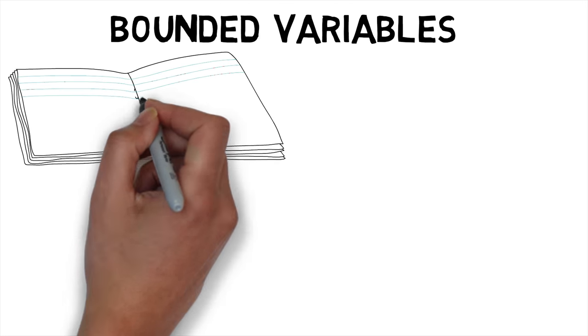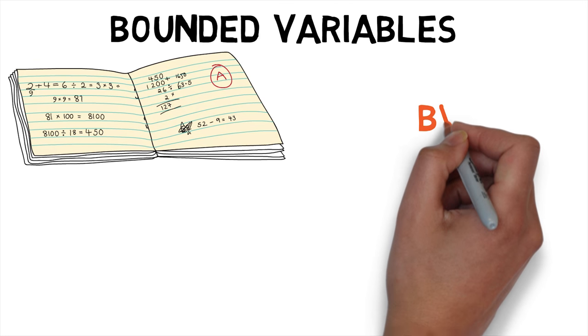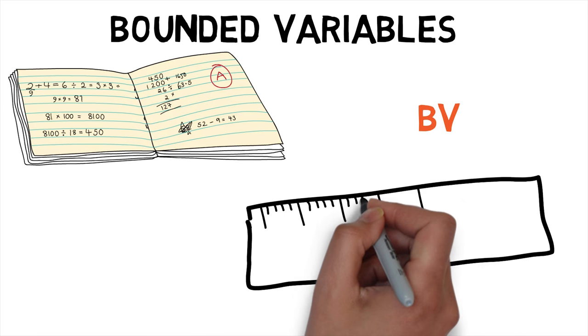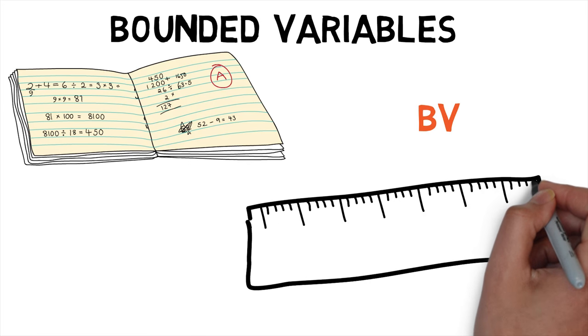In mathematical analysis, a function of bounded variation, also known as BV function, is a real valued function whose total variation is bounded, finite.